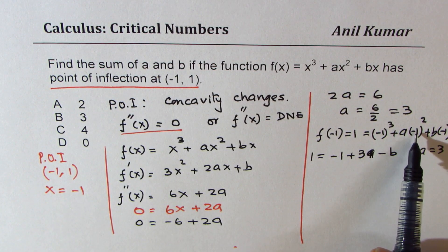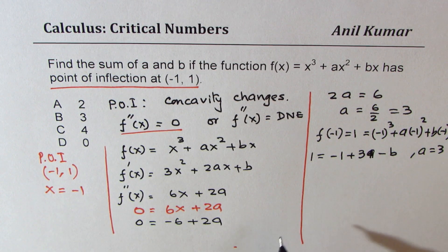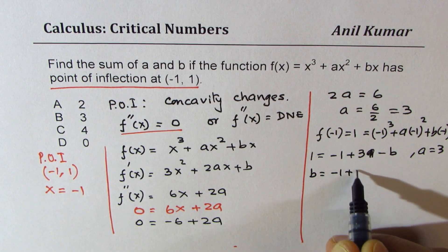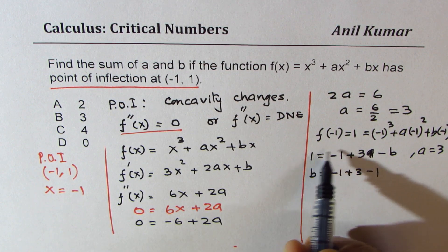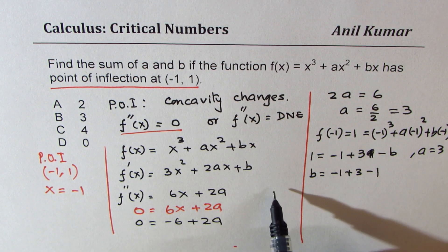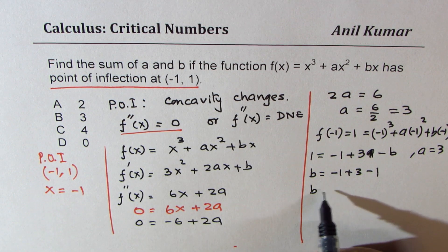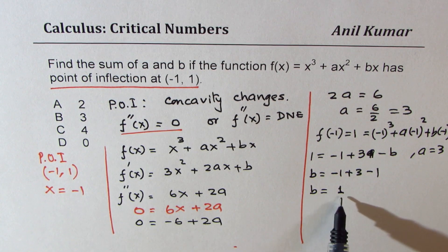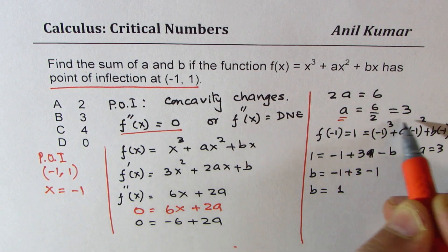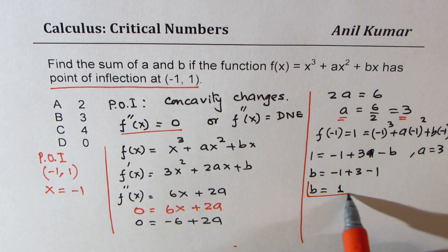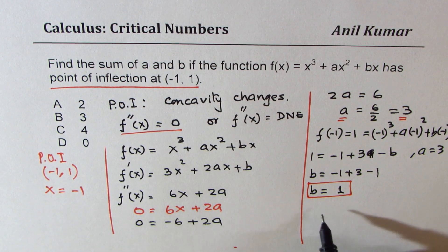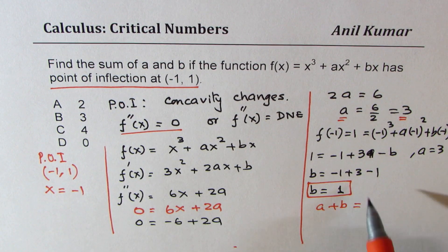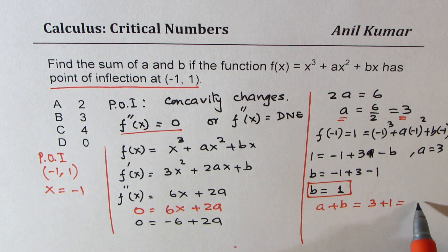With a equals 3, (-1) squared is 1, and 1 times 3 is 3. So 1 equals -1 plus 3 minus b, which means b equals -1 plus 3 minus 1, giving b equals 1. So we have a equals 3 and b equals 1, and the sum a plus b equals 3 plus 1, which is 4.